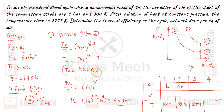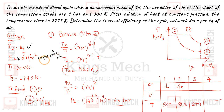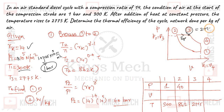So let us write the given data. Compression ratio is 14. P1 is 1 bar, that is 1 × 10⁵ Newton per meter square. T1 is 300 Kelvin. We need to find the value of thermal efficiency eta and the work done per kg.